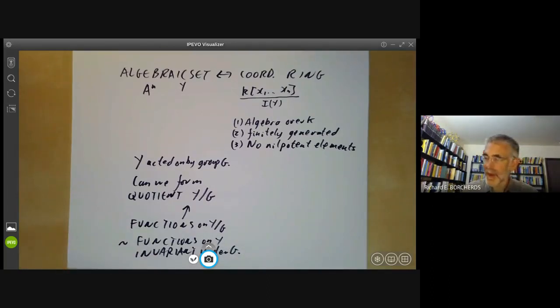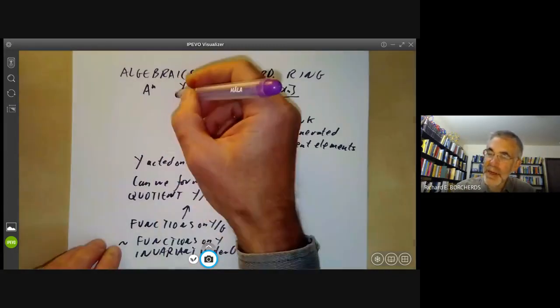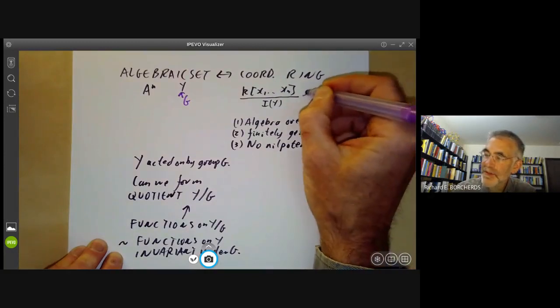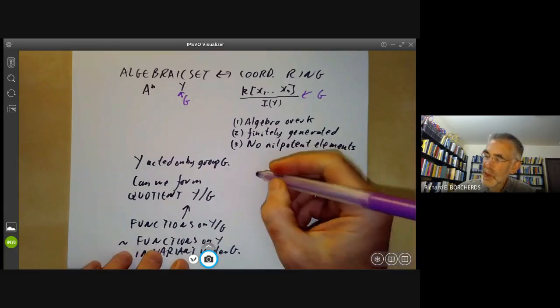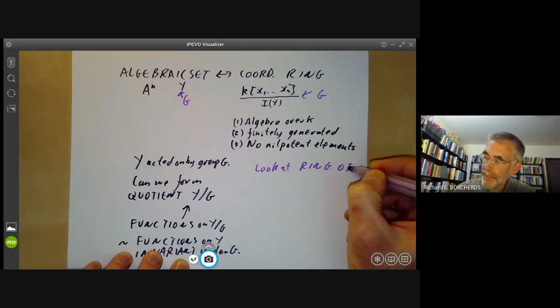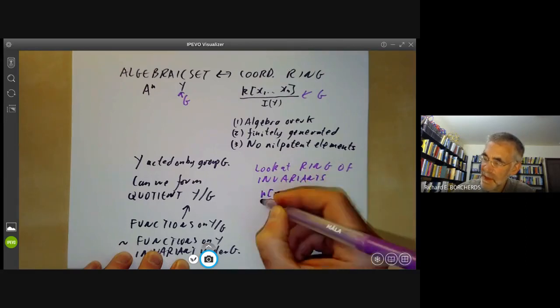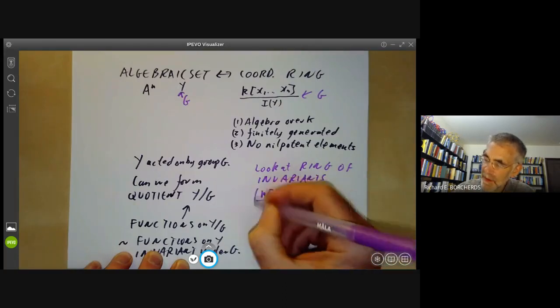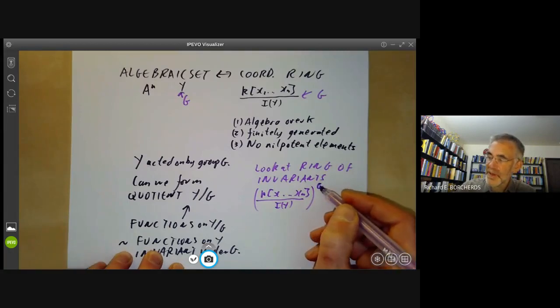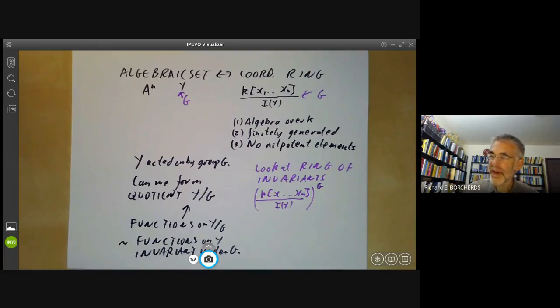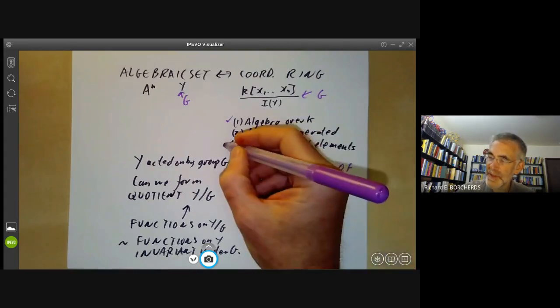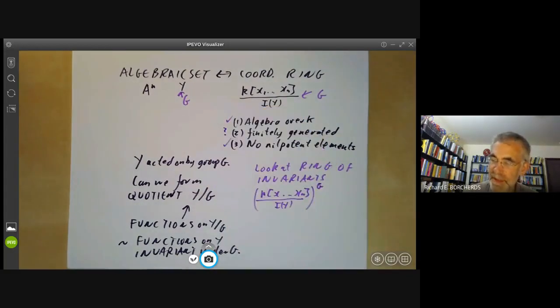So what we can do is: if we've got a group G acting on this algebraic set Y, then G will also act on this coordinate ring of Y, and we can look at the ring of invariants, where we take the coordinate ring k[x1,...,xn]/I(Y) and denote the invariants by putting a superscript G. If the invariant ring satisfies these three properties, then it's the coordinate ring of some algebraic set which it would be reasonable to call the quotient Y/G. Let's check these properties: first of all it's obviously an algebra over k, secondly it obviously has no nilpotent elements. So the problem is: is it finitely generated?